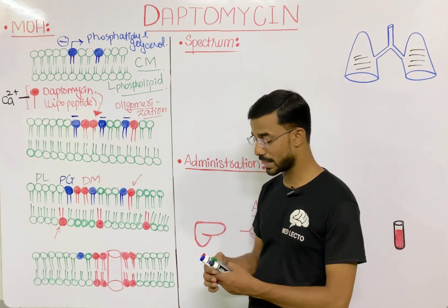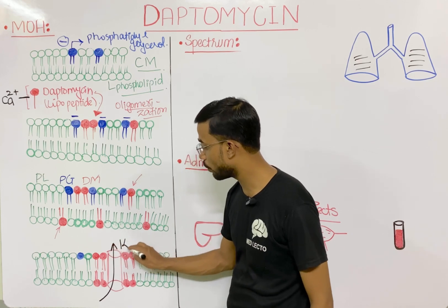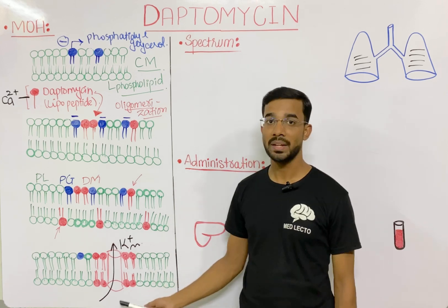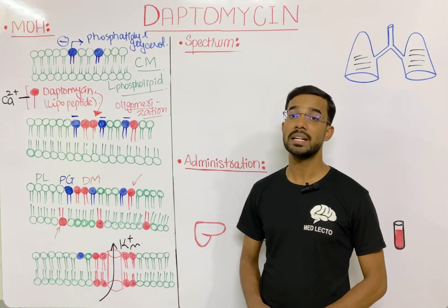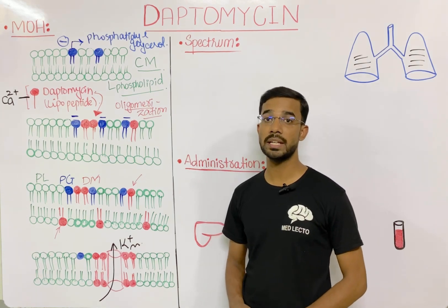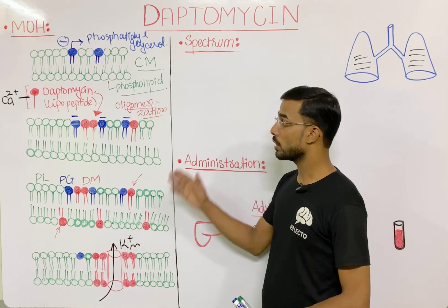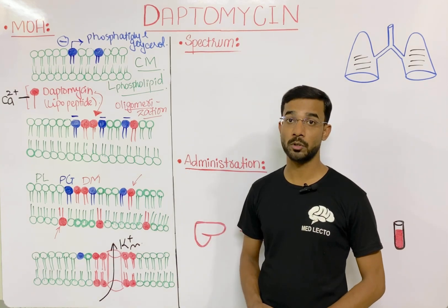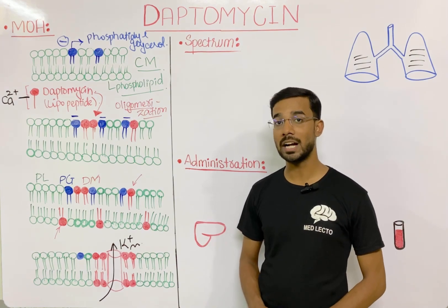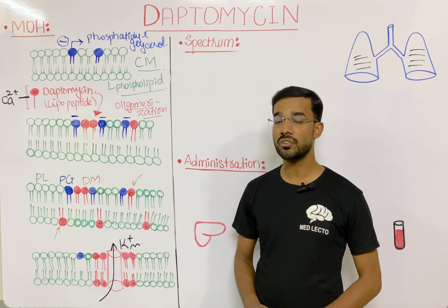From the hole, there is leakage of different cations like potassium from the bacteria. This release of cations, specifically potassium, ultimately leads to the death of the bacteria, and consequently you will also see the inhibition of DNA, RNA, and protein synthesis. This is the mechanism of daptomycin — it is a concentration-dependent bactericidal effect.